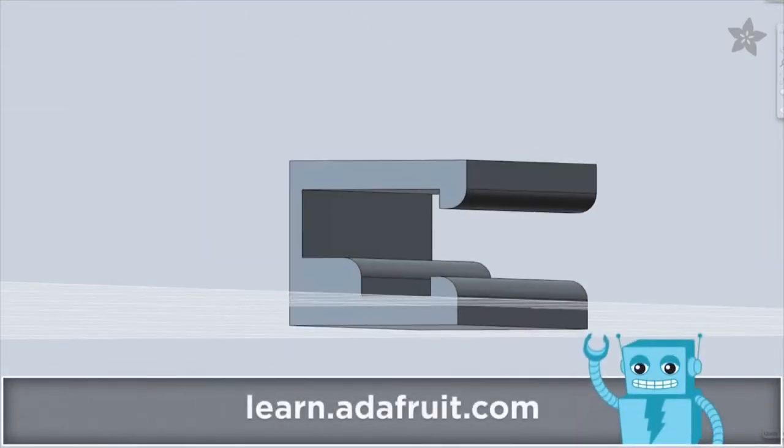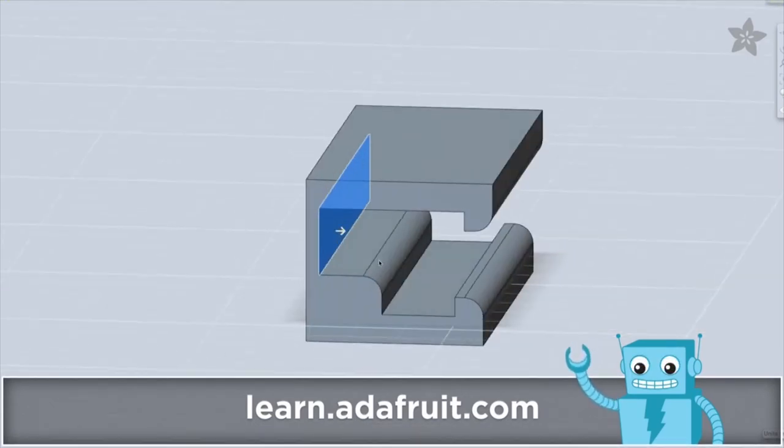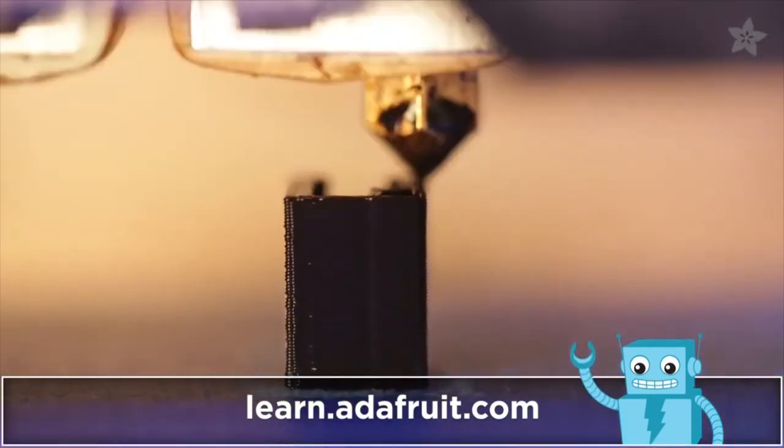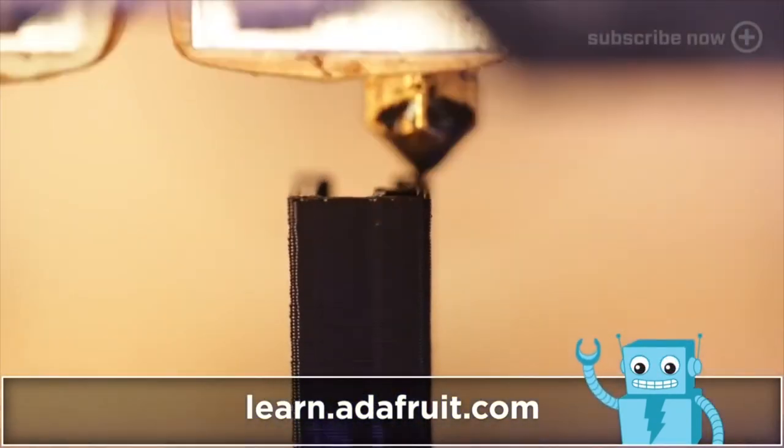Using 123D, we'll draw out a shape using our measurements and extrude it to create the first piece of our two-part mounting clip. A full tutorial is on the Adafruit learning system. A link is in the description below.